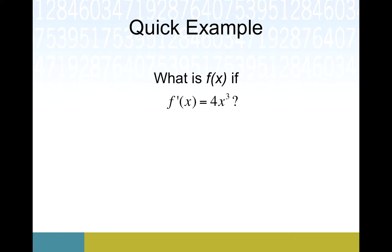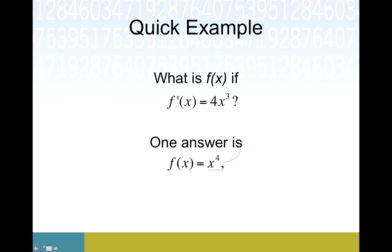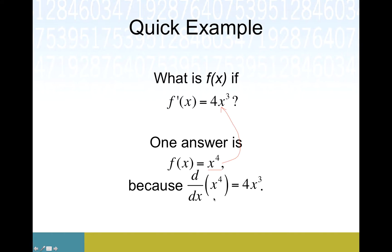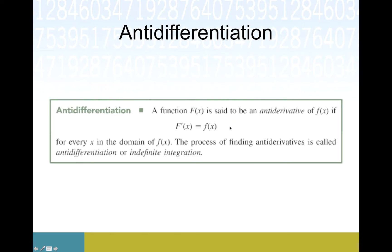It turns out there are actually multiple answers. One answer is that the original thing, this little f(x), could be x to the fourth. If we take this function and find its derivative, we would get 4x cubed out of this. You might notice the definition back in the slides said 'an anti-derivative' — the indefinite article — not 'the anti-derivative.' 'An anti-derivative' implies there could be more than one, and in fact that actually is the case.